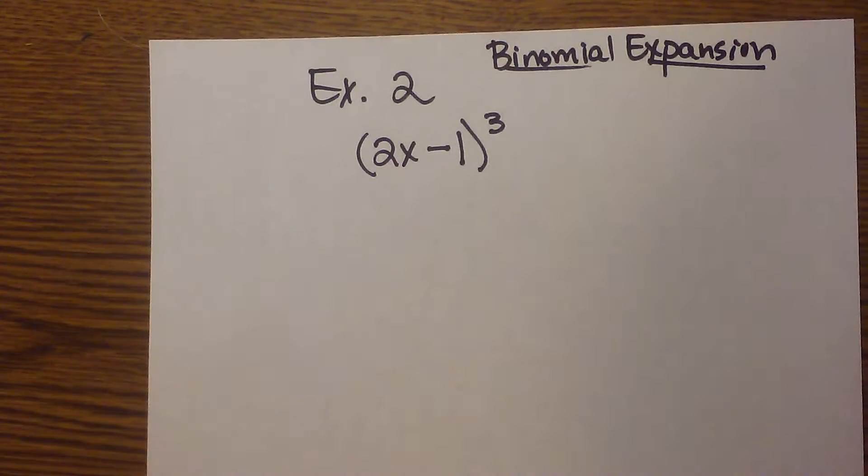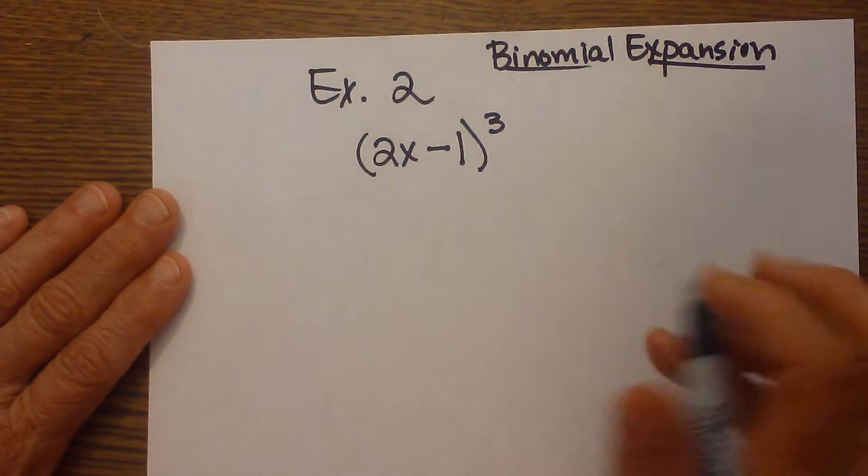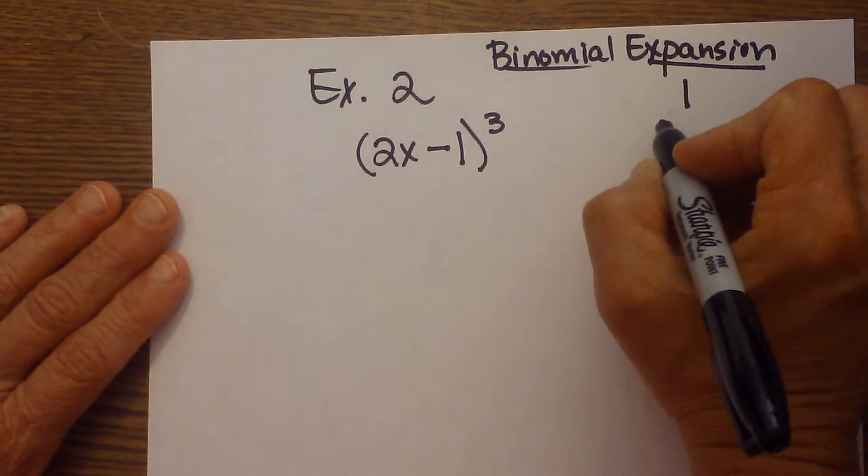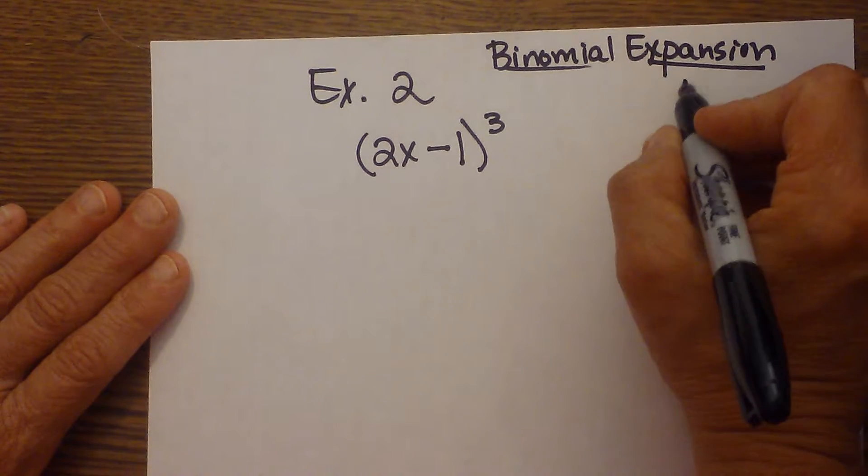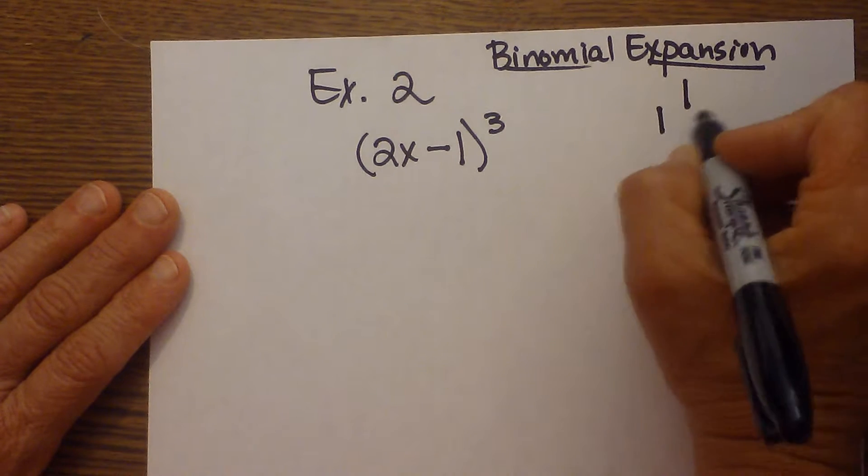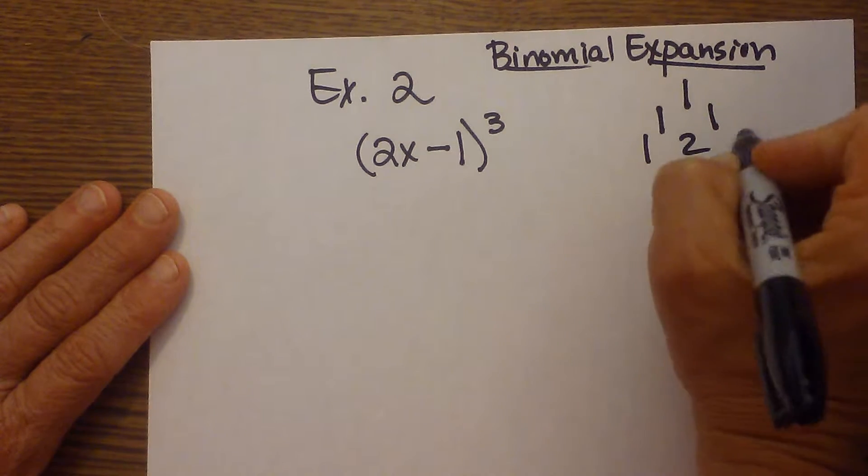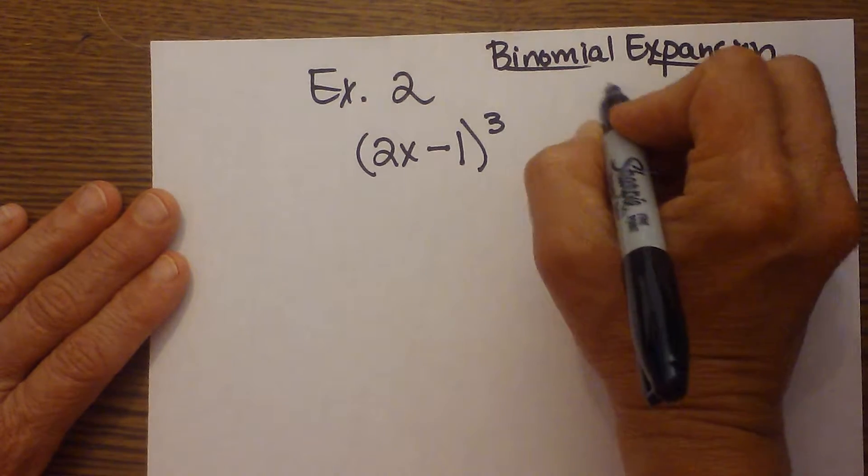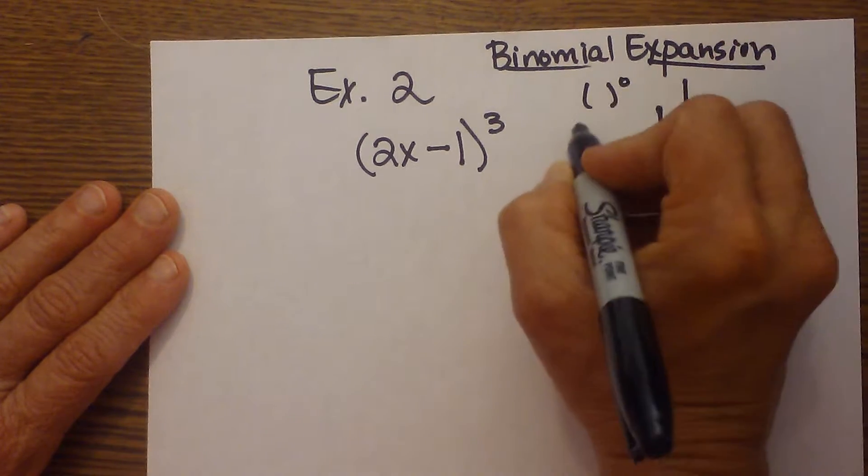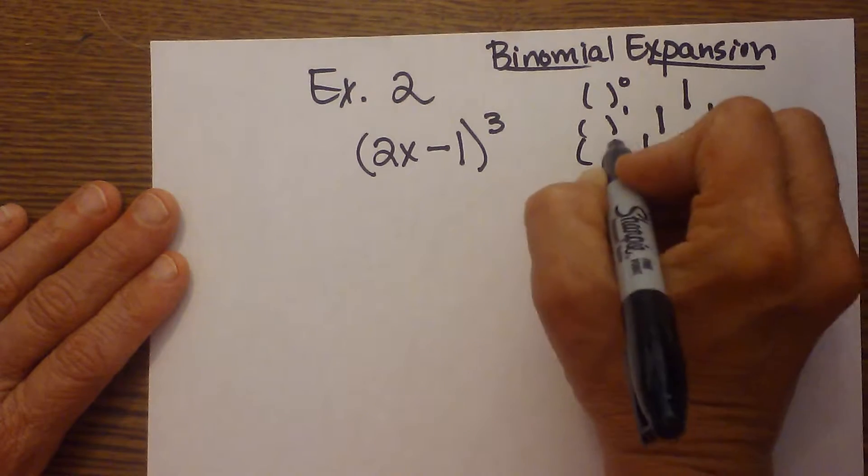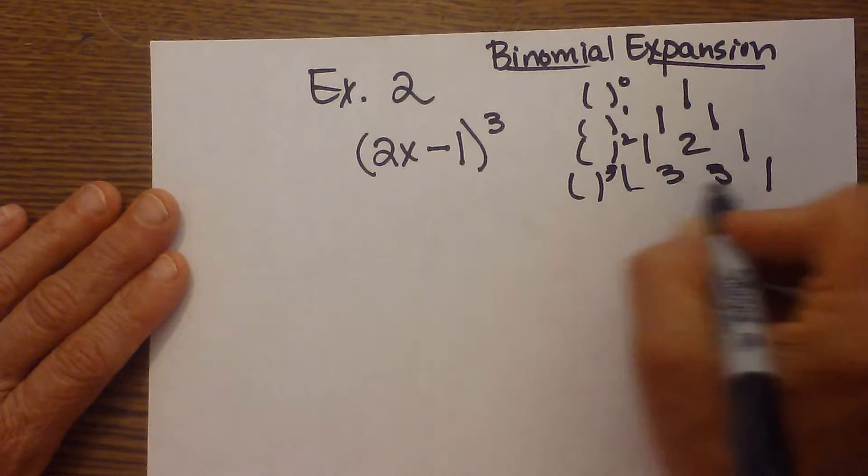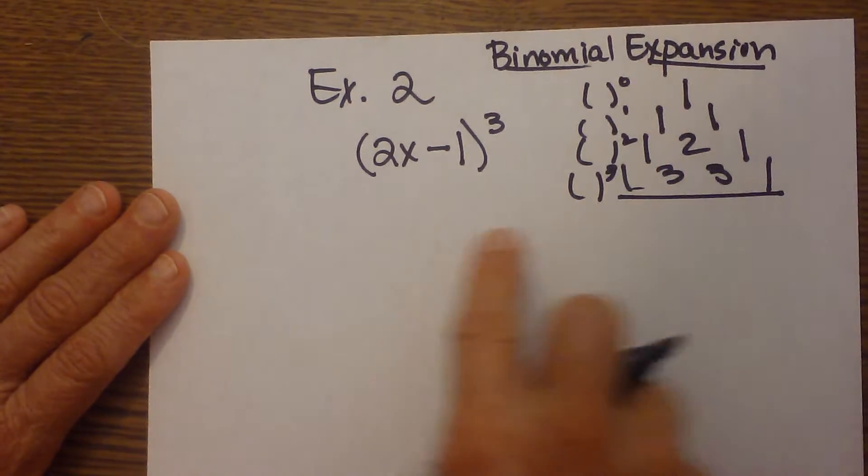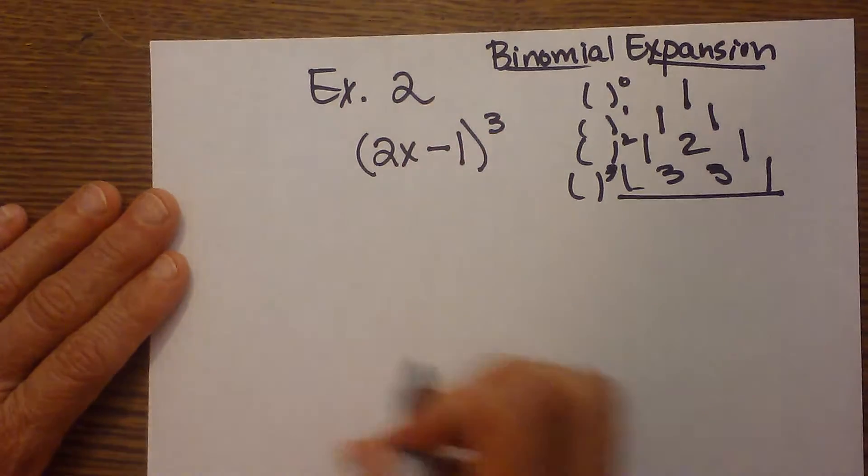So we have learned Pascal's triangle, and you can watch the video to see how we create the coefficients, but it starts off as 1, then 1, 1, then 1, 2, 1, and 1, 3, 3, 1. So this is the binomial to the zero degree, the binomial to the first degree, binomial squared, and binomial cubed. So these are my lead coefficients for this layer that I need, which is cubed.